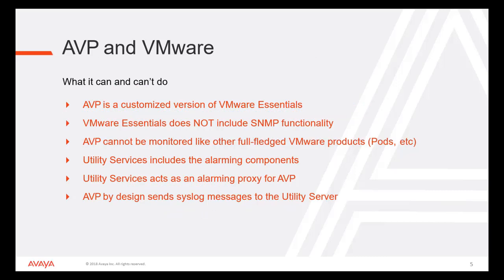AVP and VMware — what it can and can't do. AVP is a customized version of VMware Essentials. VMware Essentials does not include SNMP functionality. AVP cannot be monitored like other full-fledged VMware products, for example vPods, etc. Utility Services includes the Alarming Components which acts as an Alarming Proxy for AVP. AVP by design sends Syslog messages to the Utility Server.